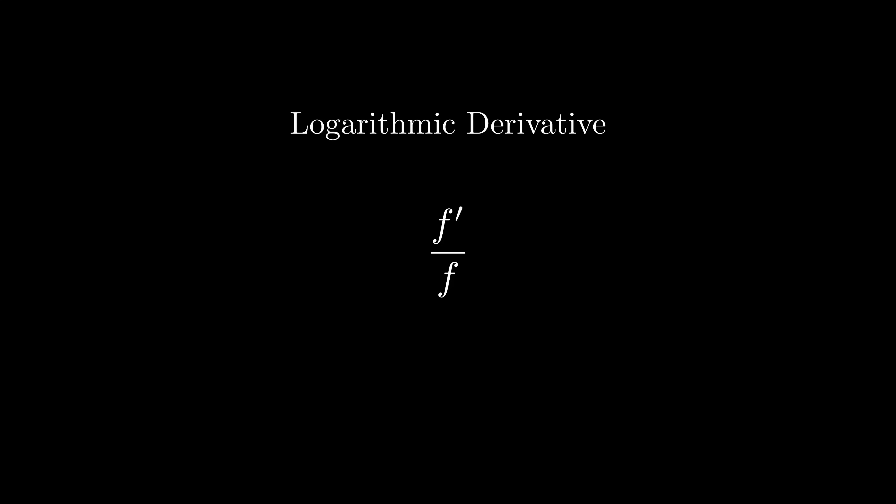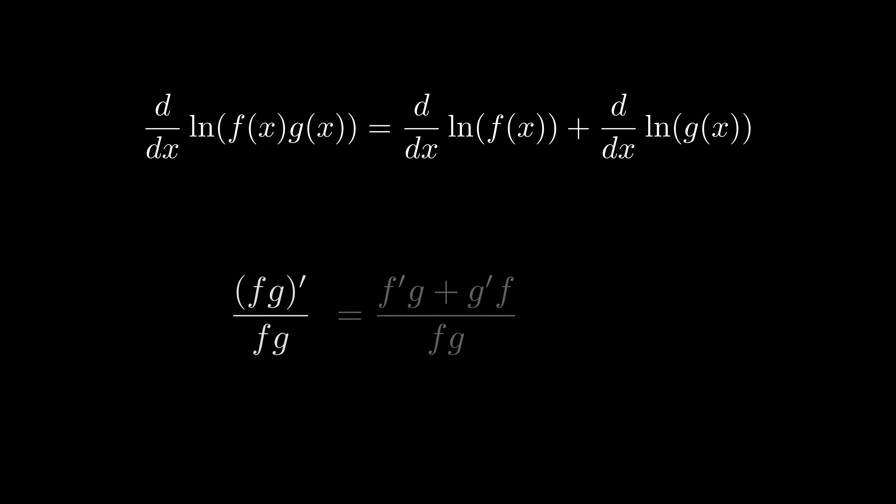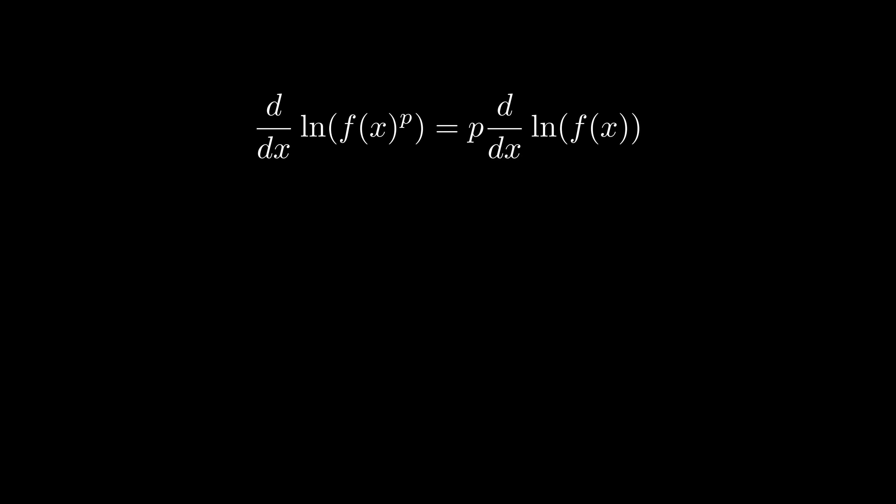But even with this new definition, it's still valid to use all of the properties of logarithms that we used. For instance, the logarithmic derivative of a product of two functions is the sum of logarithmic derivatives, and we can show that with the product rule. Also, the logarithmic derivative of a function raised to a power is that power times the logarithmic derivative of the function, which we can prove by using the power rule and the chain rule. Feel free to pause and verify, I'm not going to go into more detail here, but suffice it to say, everything we did with the logarithmic derivative is valid, if a slight abuse of notation.